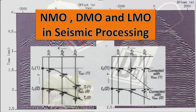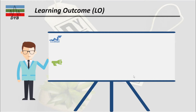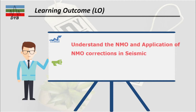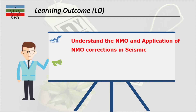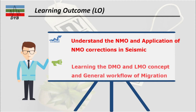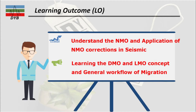Before starting the lecture, we have some learning outcomes. The first learning outcome is to understand NMO and the application of NMO corrections in seismic. The second learning outcome is to understand DMO (dip move out) and linear move out concepts, and the general workflow for these corrections before migration.